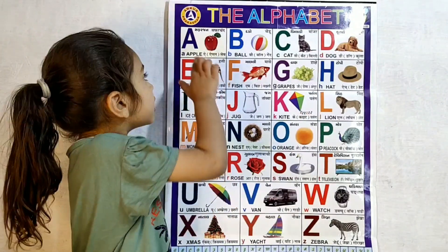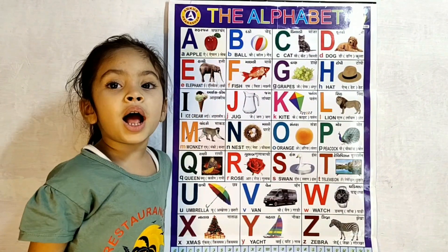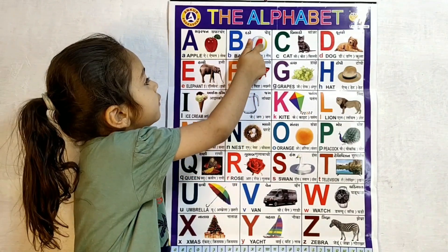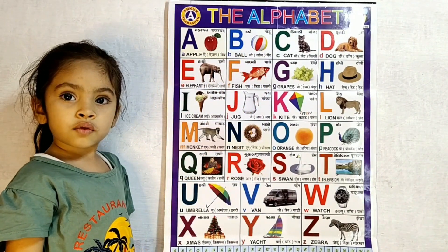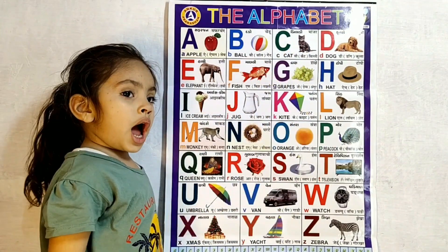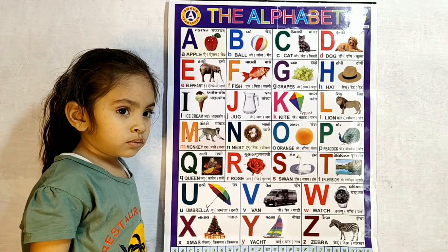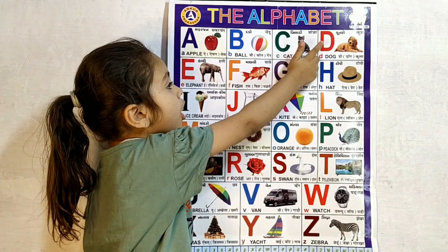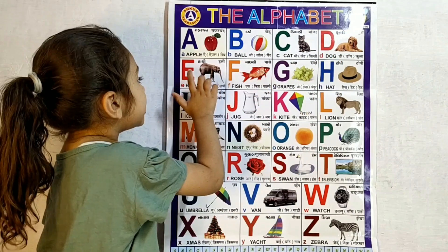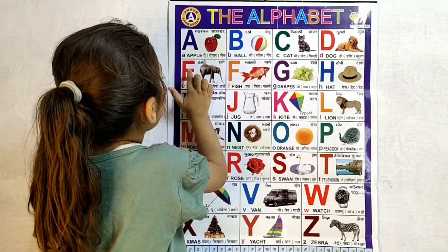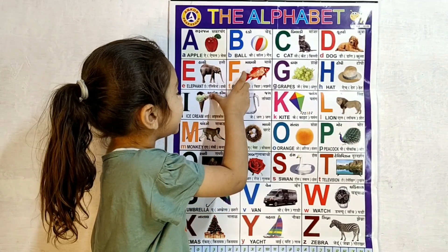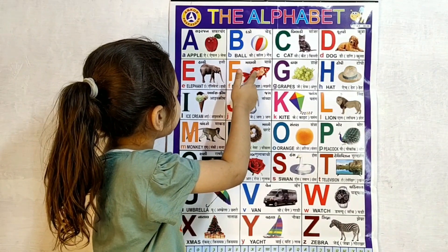A for apple, B for ball, C for cat, D for dog, E for elephant, F for fish.